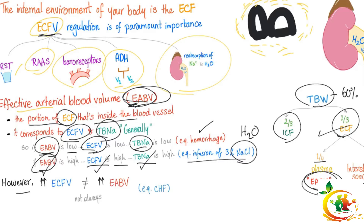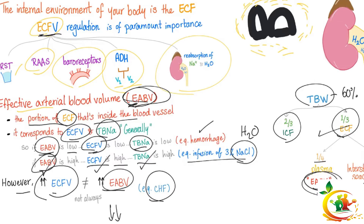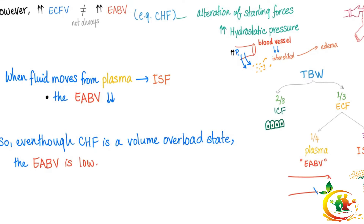However, there is an exception to every rule. Just because the extracellular fluid volume is high does not necessarily mean that the effective arterial blood volume is high. Consider CHF — congestive heart failure. It's a volume overload state, yet the effective arterial blood volume is low, because fluid is escaping from the plasma compartment to the interstitial space, causing pitting edema and leaving less effective arterial blood volume in the vessels.